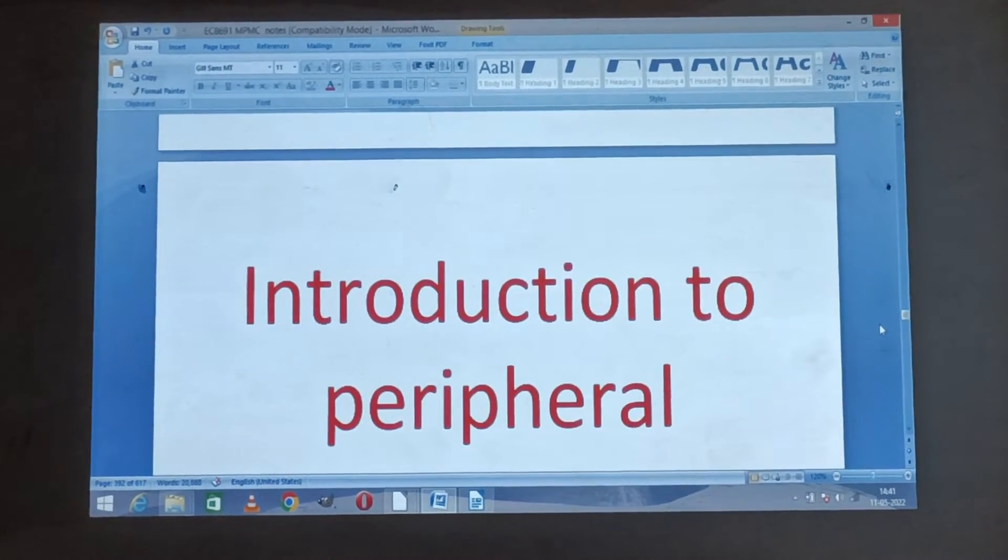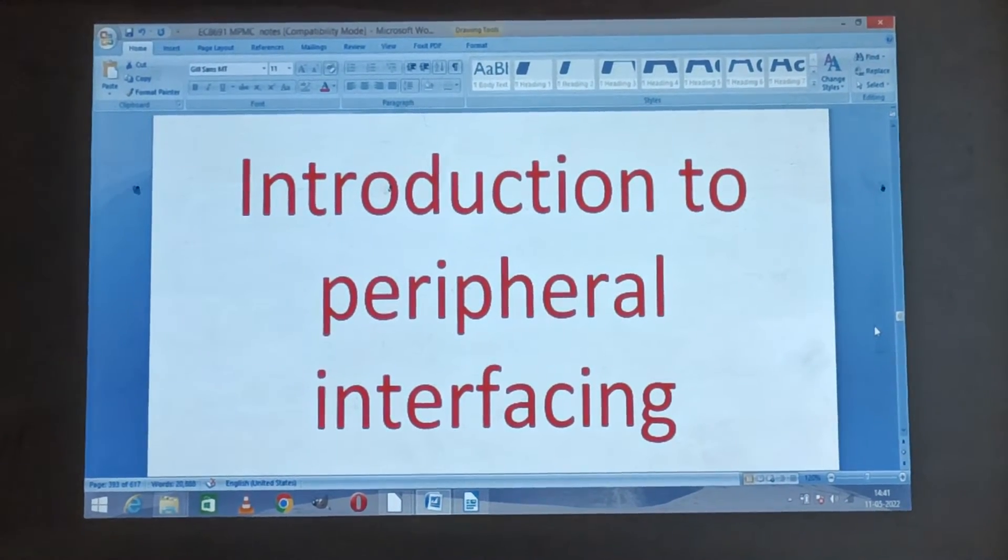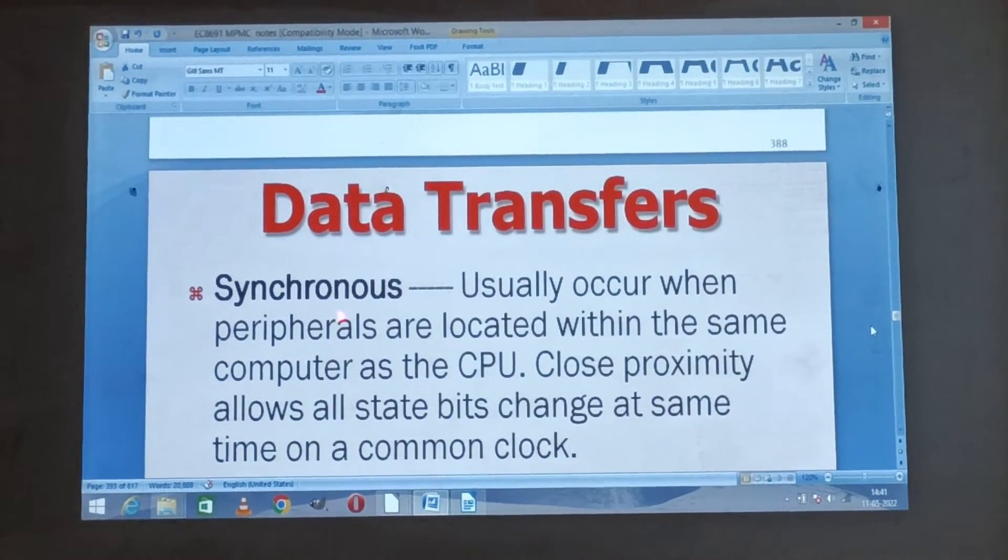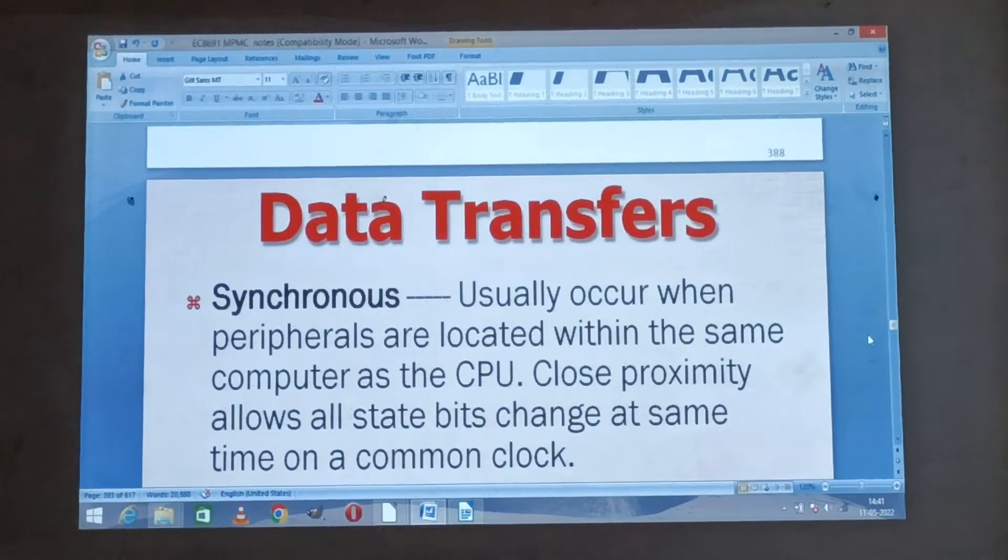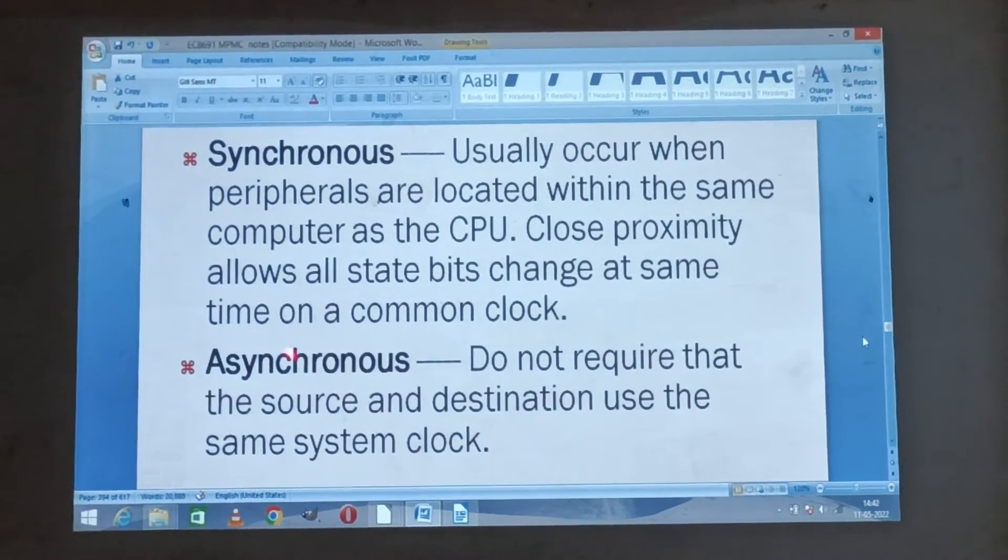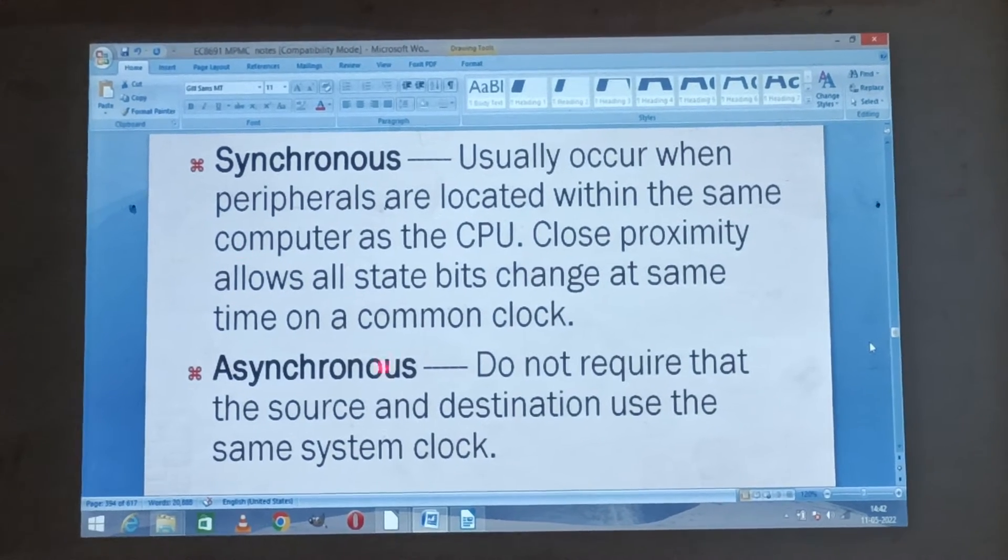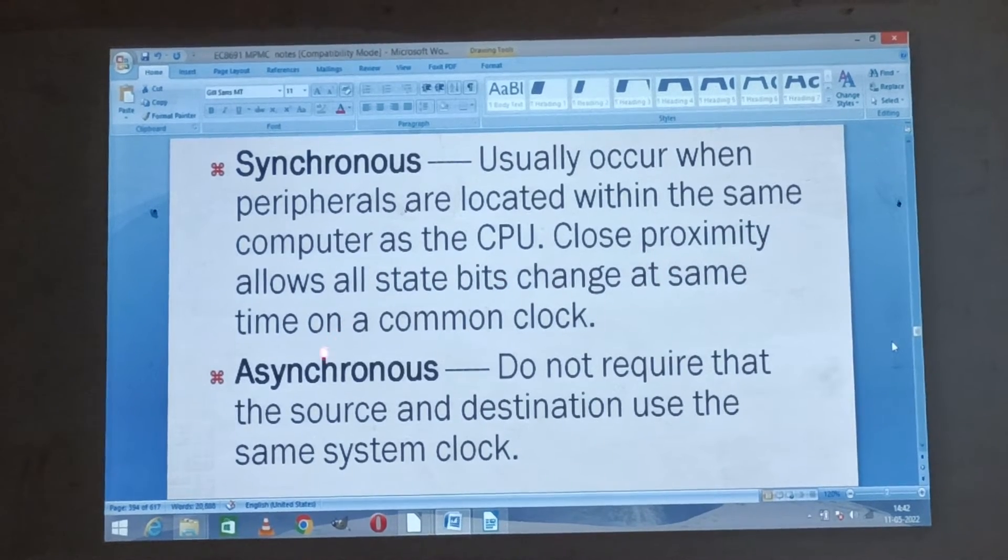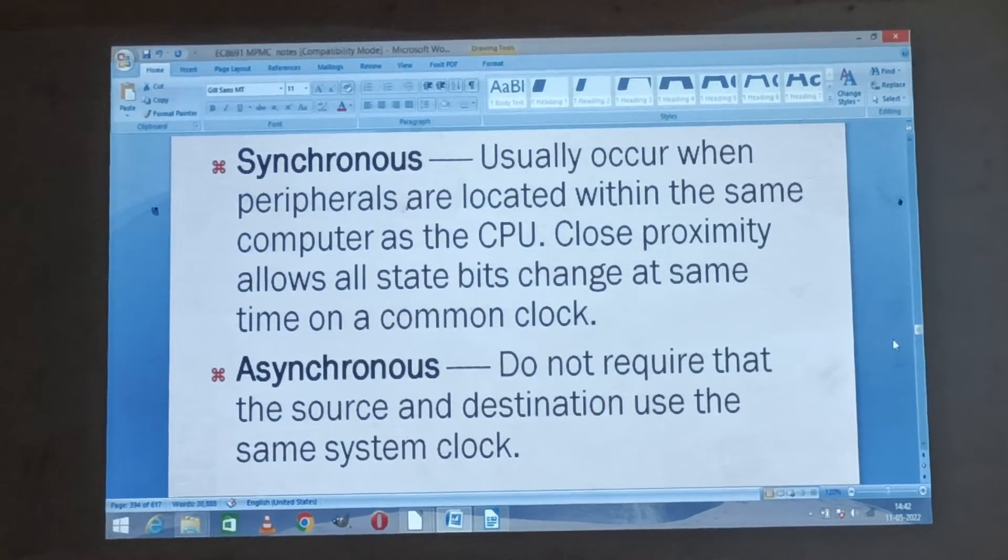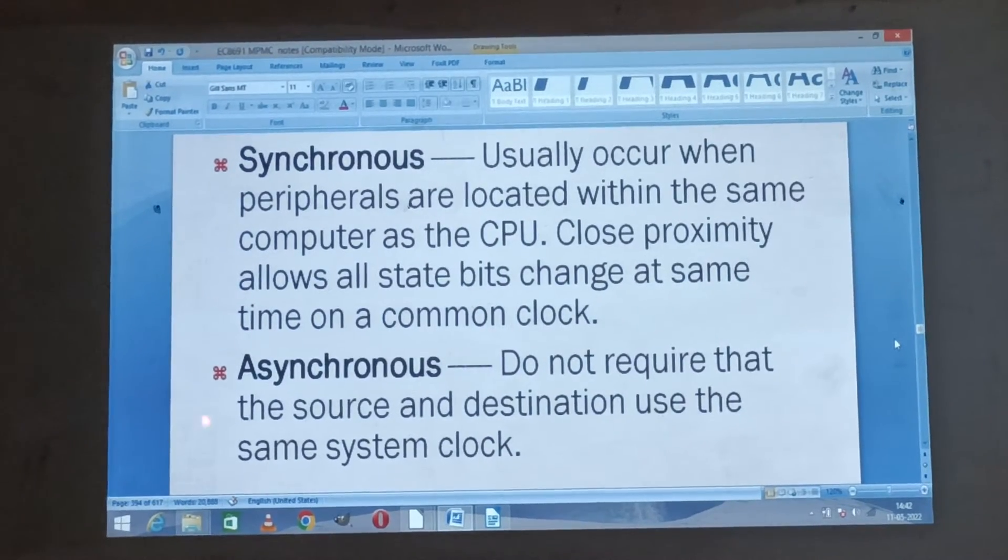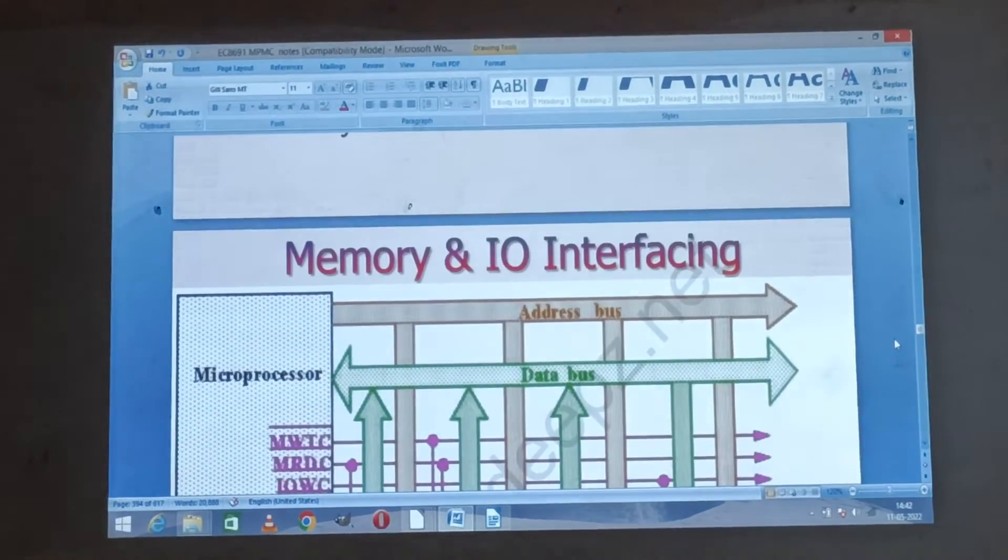Now we are going to the introduction to peripheral interfacing. Peripheral interfacing is the first one. It is data transfer. Data transfer has two types available in I/O interfacing: synchronized and asynchronous. Synchronized data transfer means close proximity allows all state bits change at the same time on a common clock. Asynchronous doesn't require that the source and destination use the same system clock.